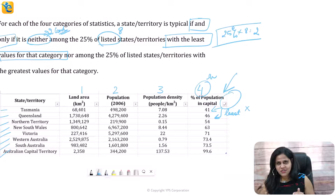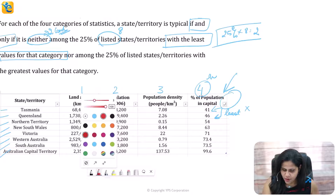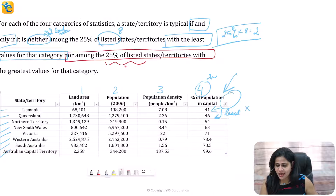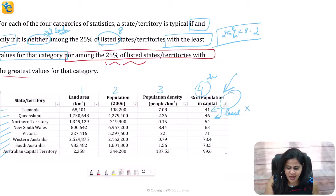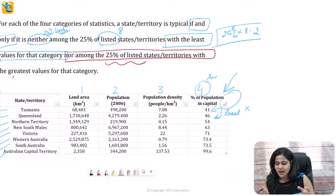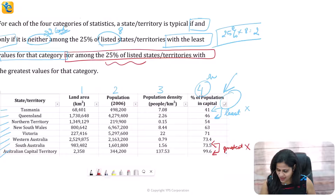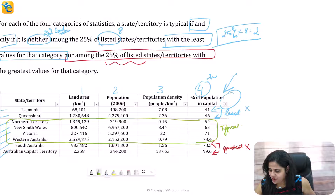Now let's read the next condition: nor among the 25% of the listed states — we've already understood that 25% of eight is two — with the greatest values for that category. So it is going to be typical if it is neither in the least two nor in the greatest two. What is the actual criteria? Only these states from rank three through rank six will be considered as typical, because they are from the third to the sixth rank.